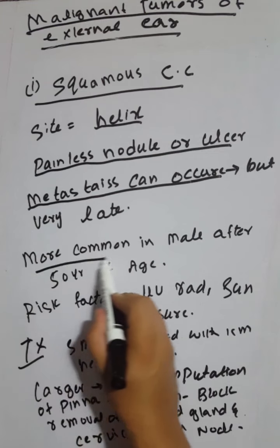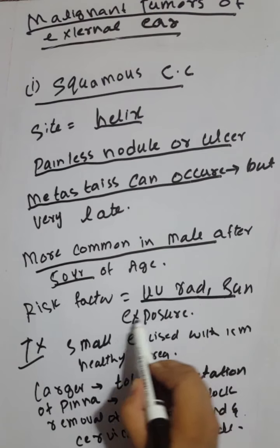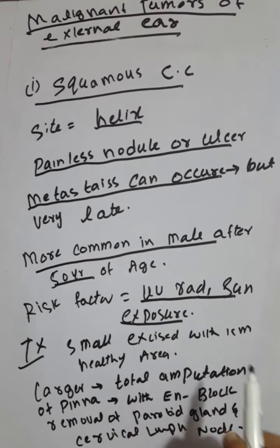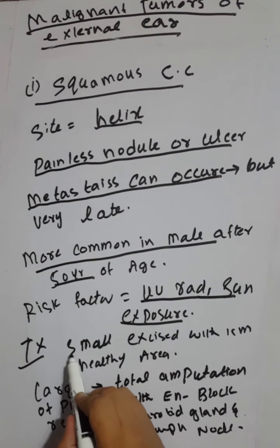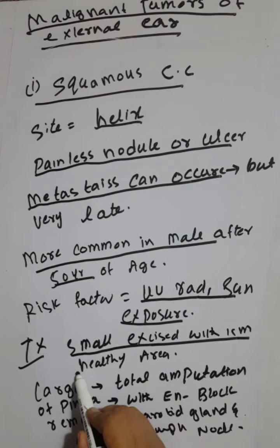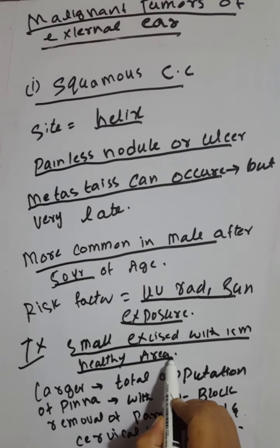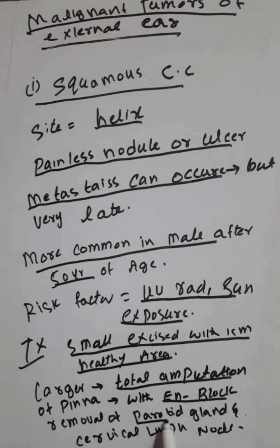Squamous cell carcinoma is more common in males after 50 years of age. The risk factor is ultraviolet radiation and sun exposure. Treatment depends on the size of the tumor. Small tumors are excised with one centimeter of healthy margin. For larger tumors, total amputation of the pinna with en-bloc removal of the parotid gland and cervical lymph nodes can be done for tumors greater than one centimeter in diameter.